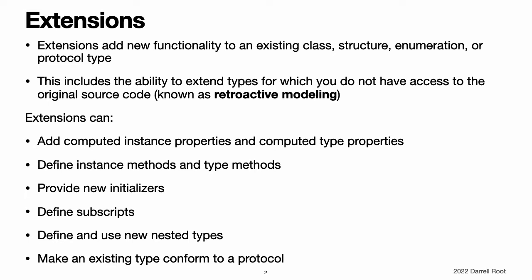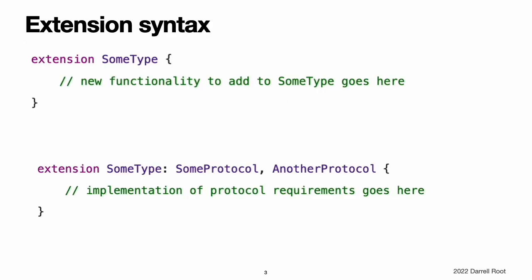Note, extensions can add new functionality to a type, but they cannot override existing functionality. Extension Syntax. Declare extensions with the extension keyword. An extension can extend an existing type to make it adopt one or more protocols. To add protocol conformance, you write the protocol names the same way as you write them for a class or structure.